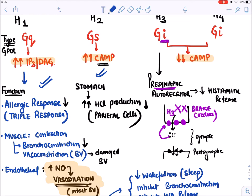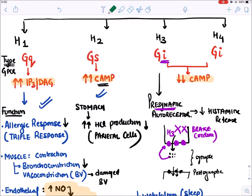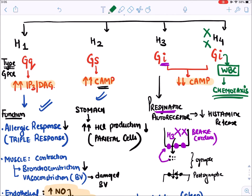H4 receptors have been recently found on WBCs and are responsible for chemotaxis. Their full mechanism is still being elucidated and we currently have no drug acting on H4 receptors, so H4 is currently irrelevant for pharmacology. Drugs are generally available for H1, H2, and H3 receptors.